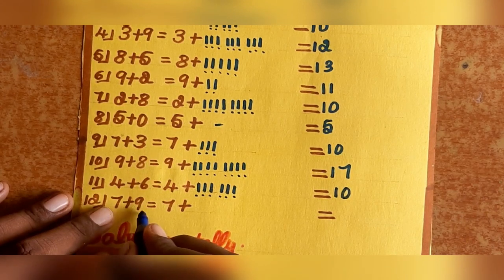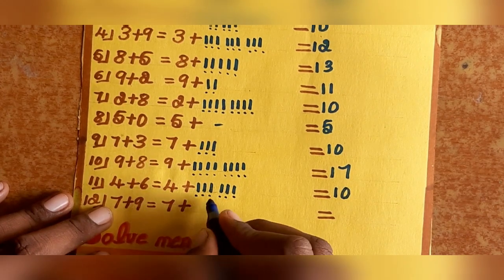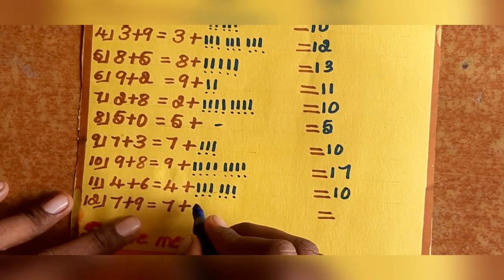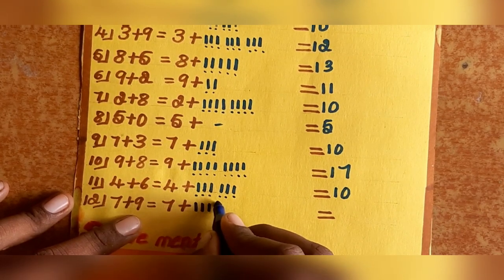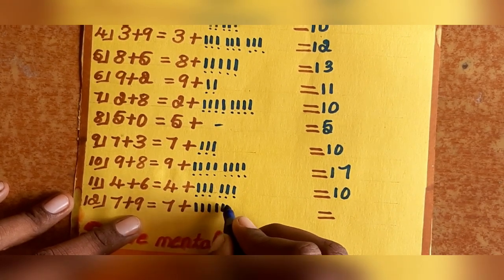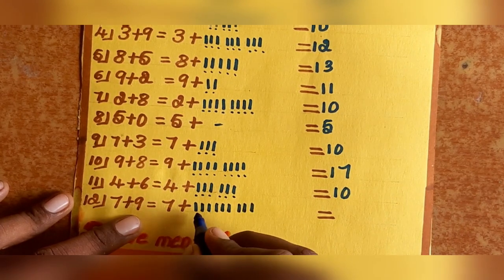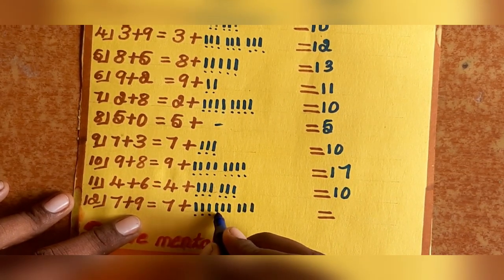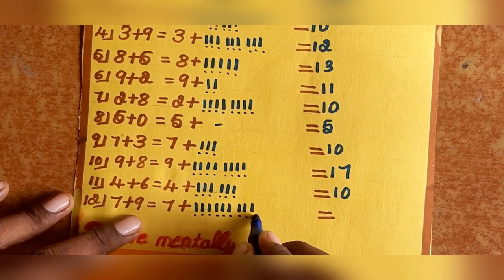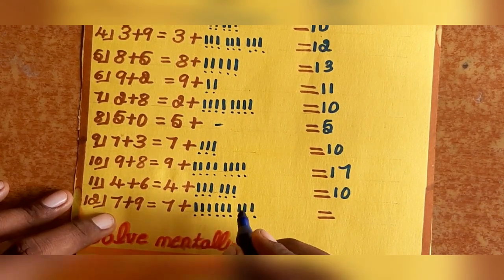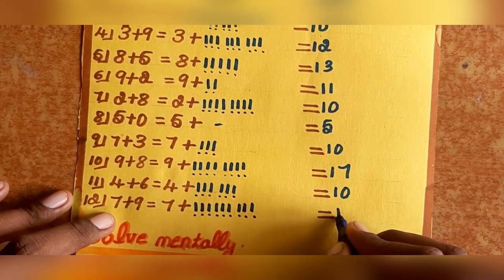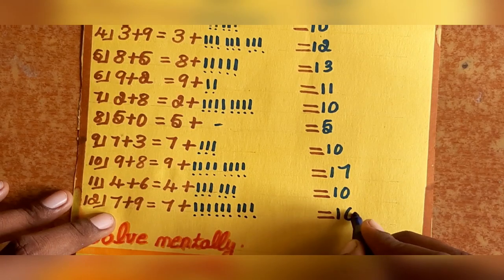Example 13: 7 plus 9. Keep 7 in your mind and add 9. Count 9 numbers: 8, 9, 10, 11, 12, 13, 14, 15, 16. So 7 plus 9 equals 16.